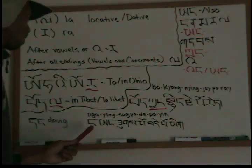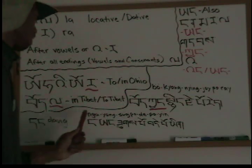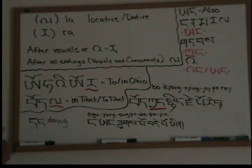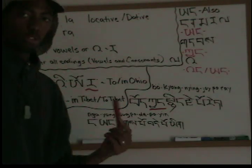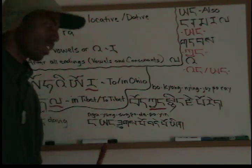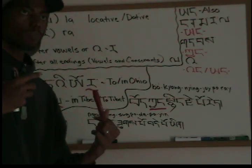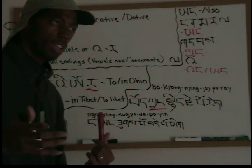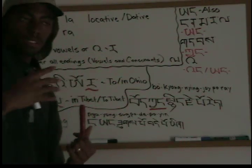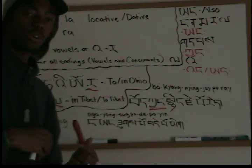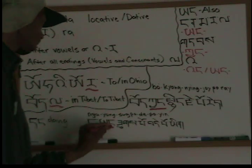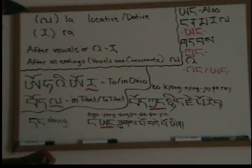Next example: 'Nga yang subo de bui' — I am also well, or my body is also well. You would use that as a response. If someone asks 'Khyed kyang kuzu de bui yin be?' and you say 'Nga subo de bui,' they may ask 'Dan kuzu de bui yin be?' and you reply 'Nga yang subo de bui.' Yang here means 'also' for 'I am also.' Because 'Nga' ends with 'na,' it takes yang. Those are pretty simple — just practice a little bit and make your own sentences.